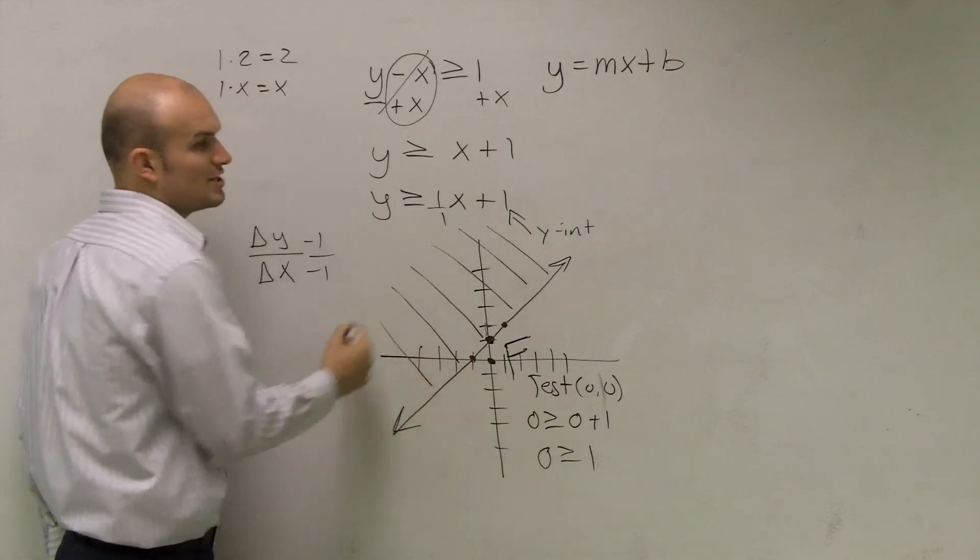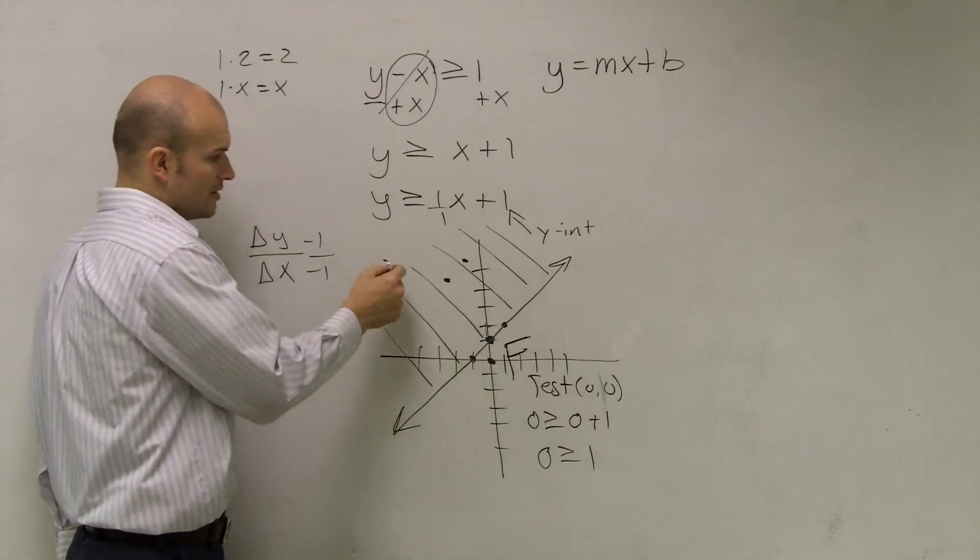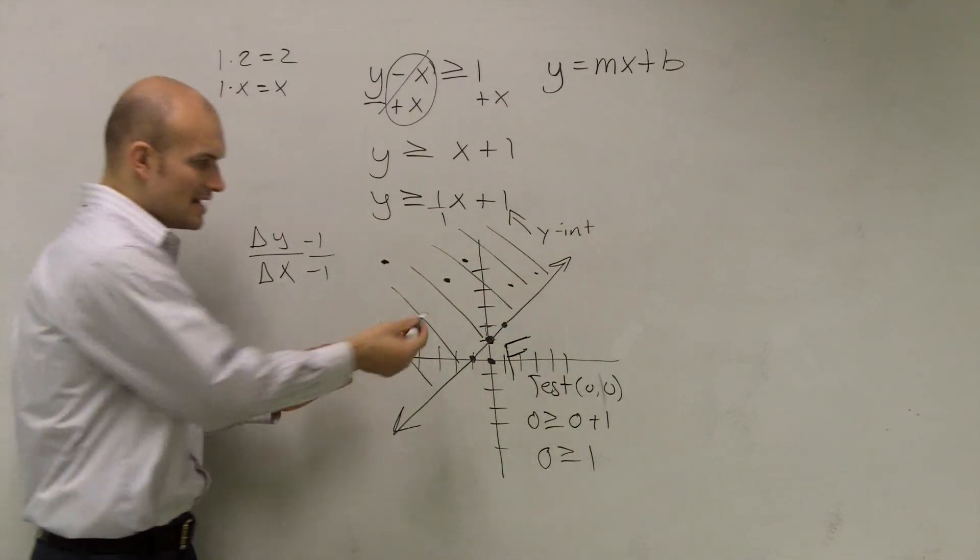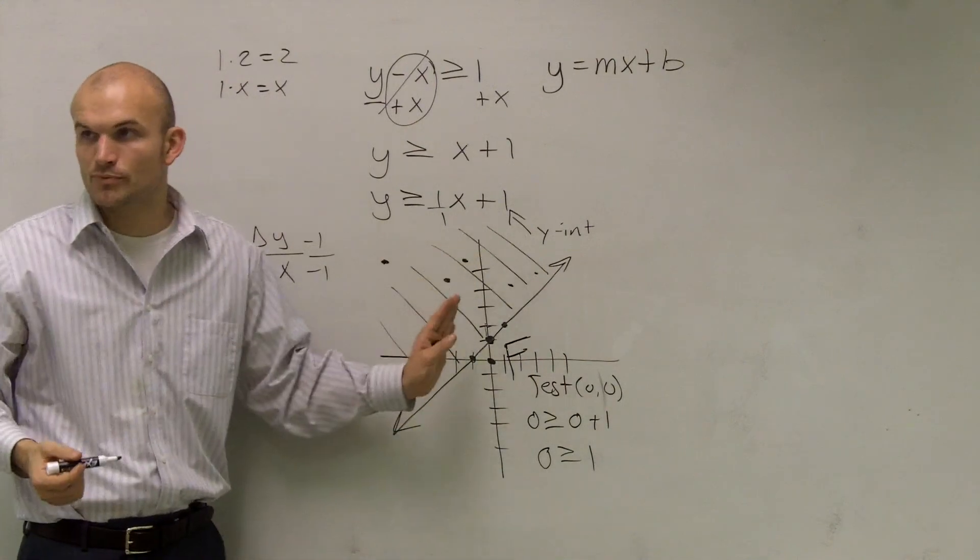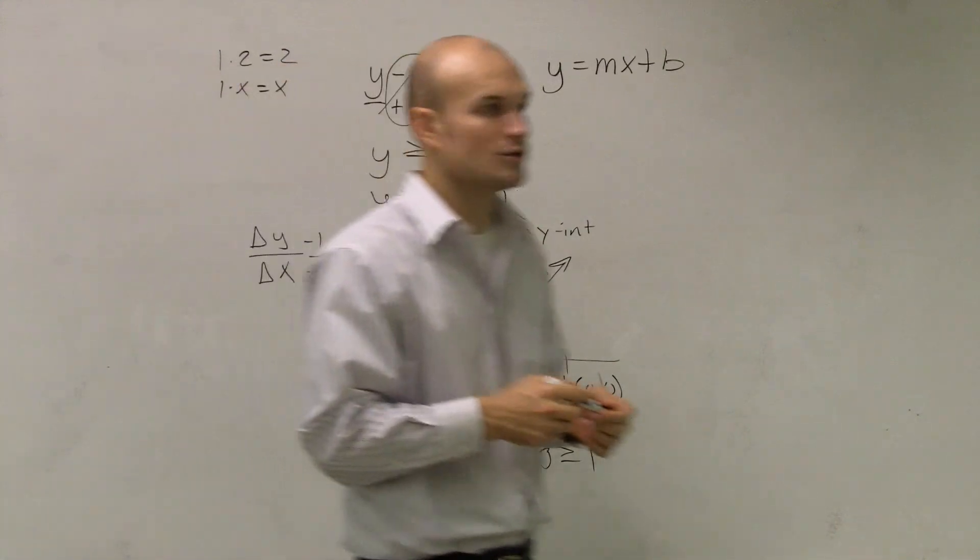So we shade them. And the only reason why we shade them, guys, is because this point's true. This point's true. There's infinite many points that are true. So instead of making all these little dots saying, here's all the true points, we just throw out a shading, and we shade everything. So that's how you graphed your homework.